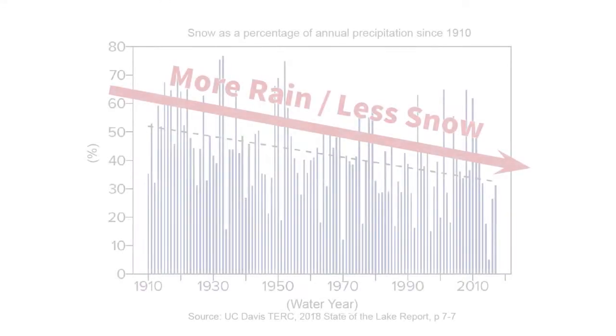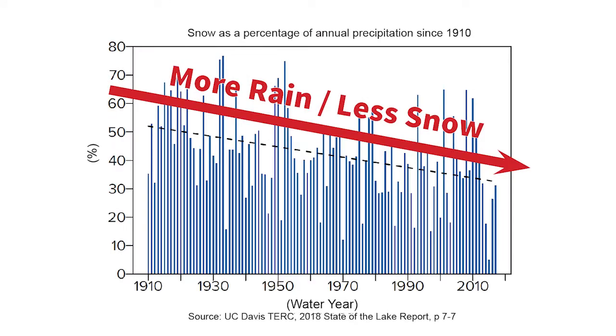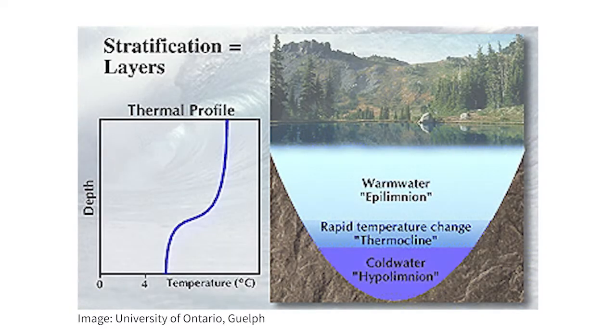As temperatures warm, we are seeing more extreme precipitation events occurring as rain instead of snow. When it snows, cold water from the snowmelt sinks to the bottom of the lake because cold water is more dense than warm water.